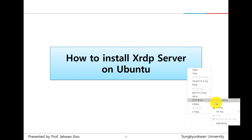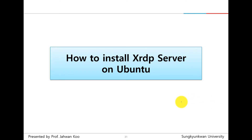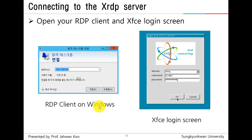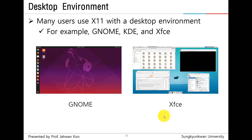What is XRDP Server? XRDP Server is an open source software of the Microsoft Remote Desktop Protocol that allows you to graphically control a remote system. You can log in to the remote machine and create a real desktop session using XRDP.